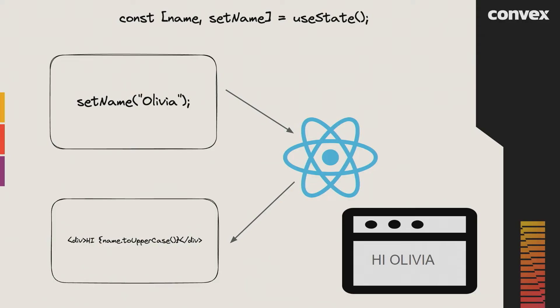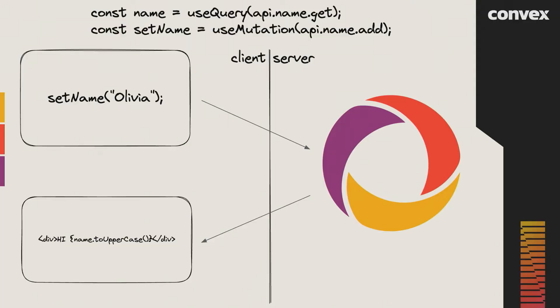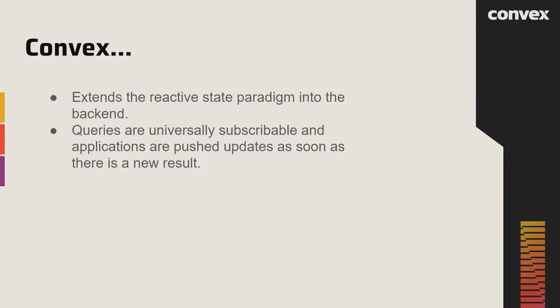The problem is this paradigm breaks down when the server gets involved — the server doesn't play the game this way. You still have to poll the server, invalidate caches, invent your own push mechanisms. Convex fixes that. Convex has queries and mutations like other frameworks, but it completely and pervasively tracks data flow and dependencies through the backend, extending the reactive paradigm into the backend.